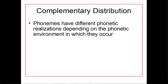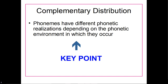So contrastive distribution is when two sounds are different phonemes and occur in the same environment. Complementary distribution is when two sounds occur in different environments only, rather than the same environment. In complementary distribution, phonemes have different phonetic realizations — the same underlying sound is actually pronounced differently depending on the environment it occurs in. This is probably the most important point of this week: phonemes can be pronounced differently depending on the other sounds around them.